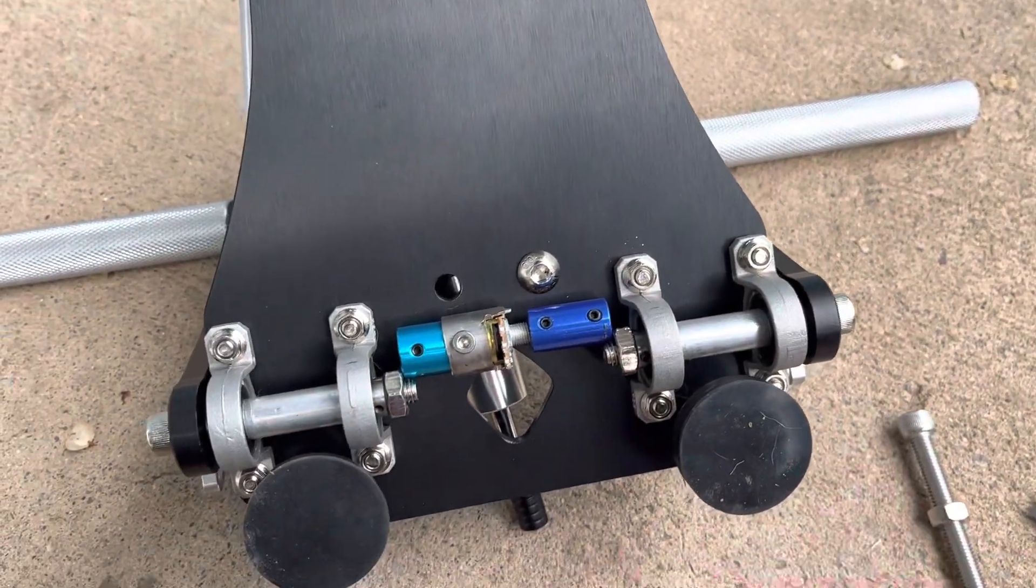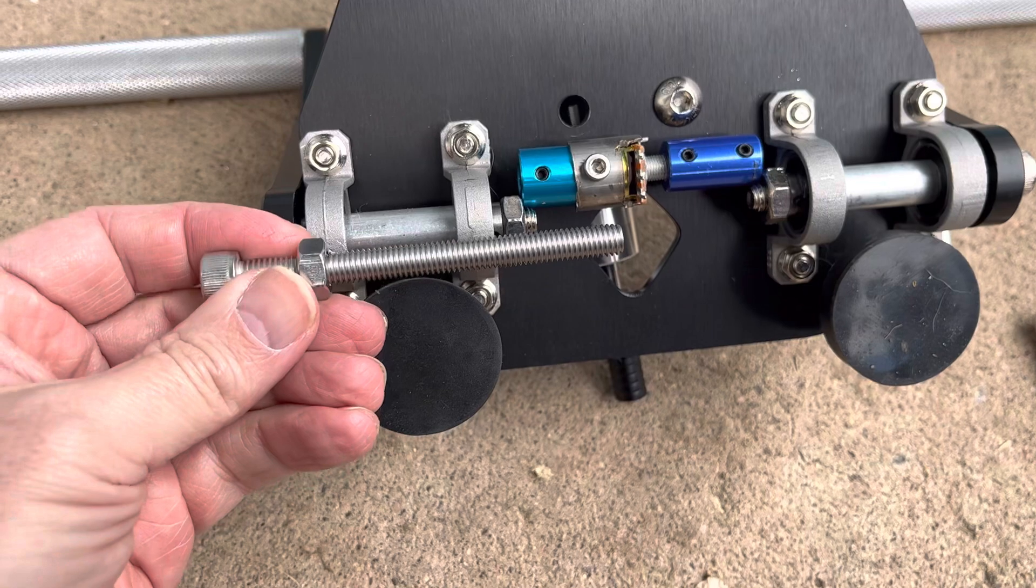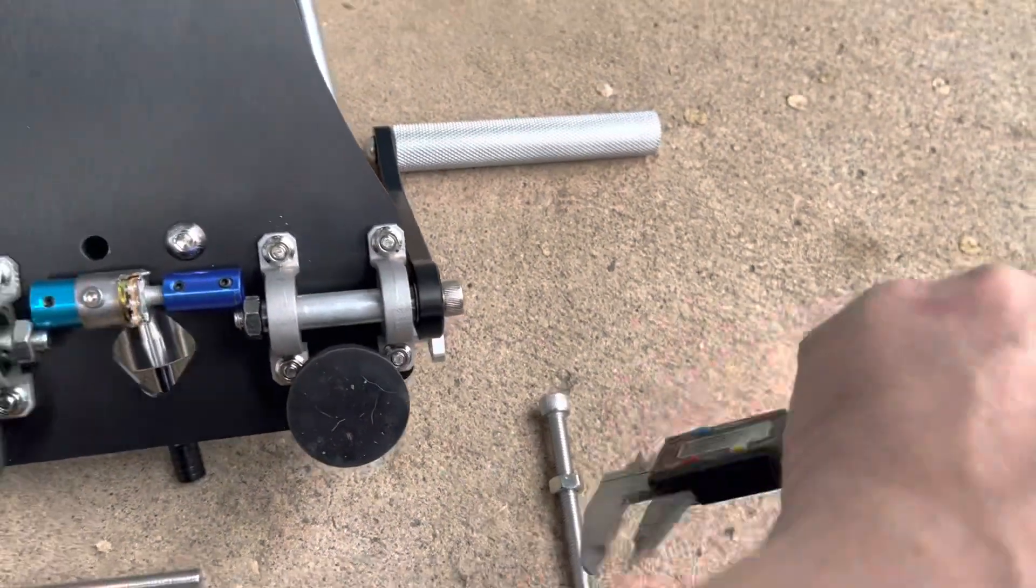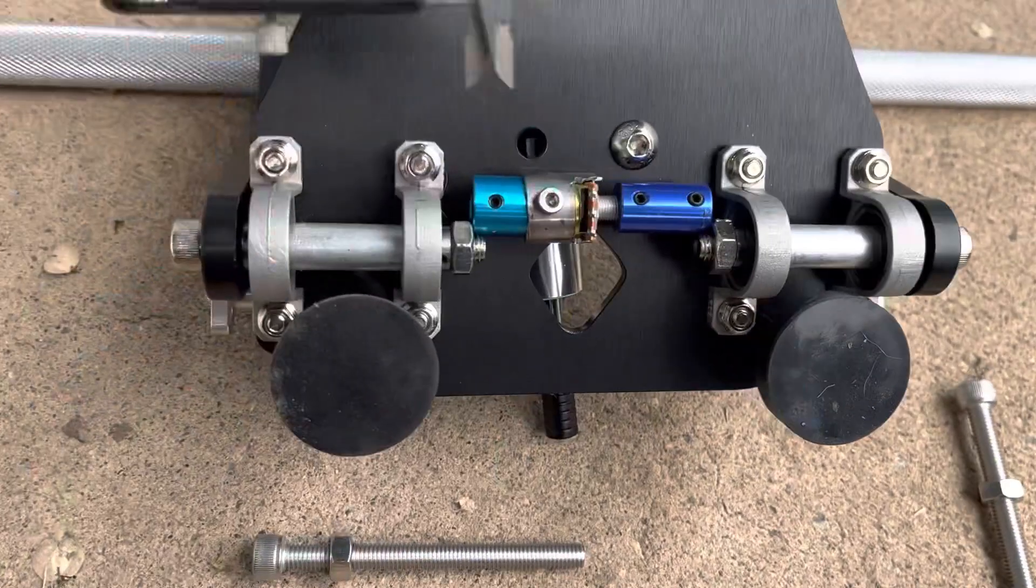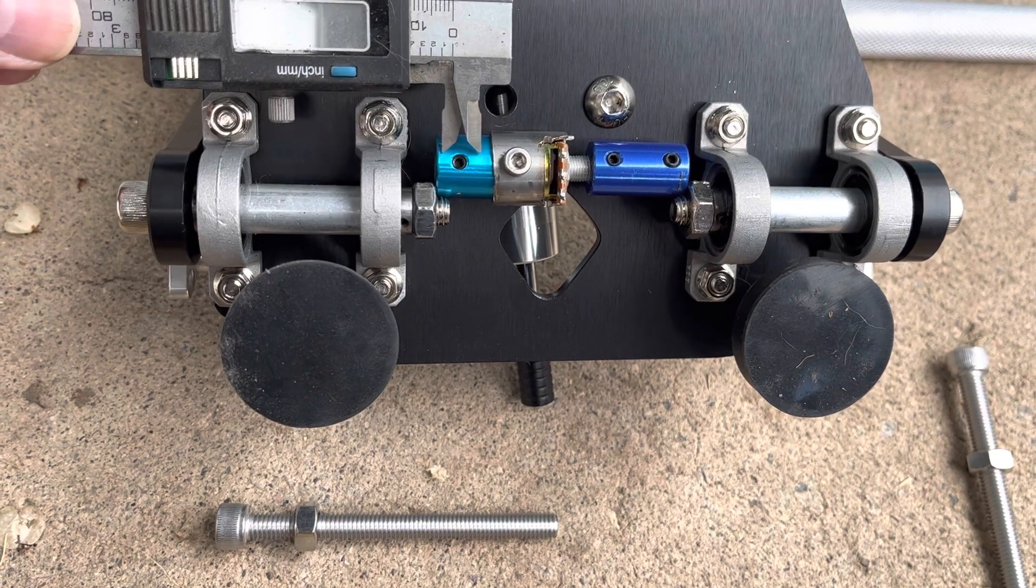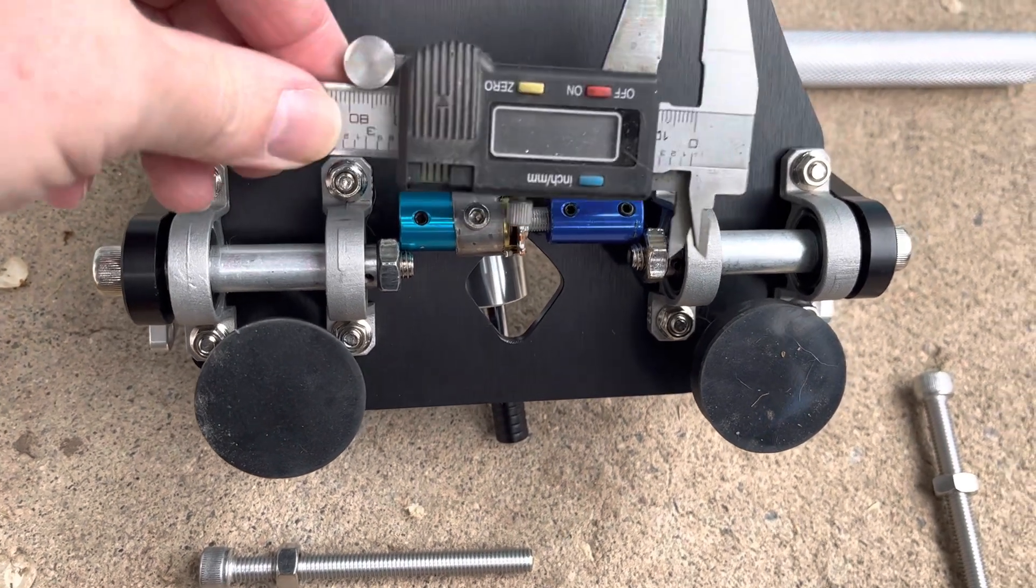I've got some slightly longer screws I'm going to trim, and I'm only going to need about 10 millimeters of space on the threads to get a proper lock on that on either side.